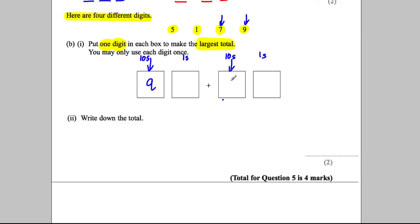So put the 9 there, let's say, and the 7 there. So that gives us the biggest tens we can possibly get.